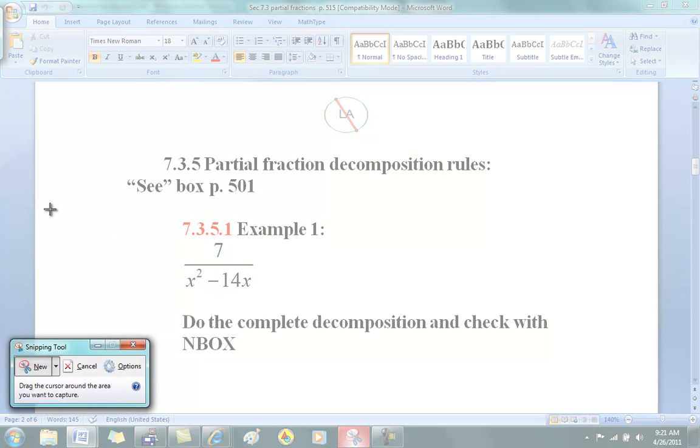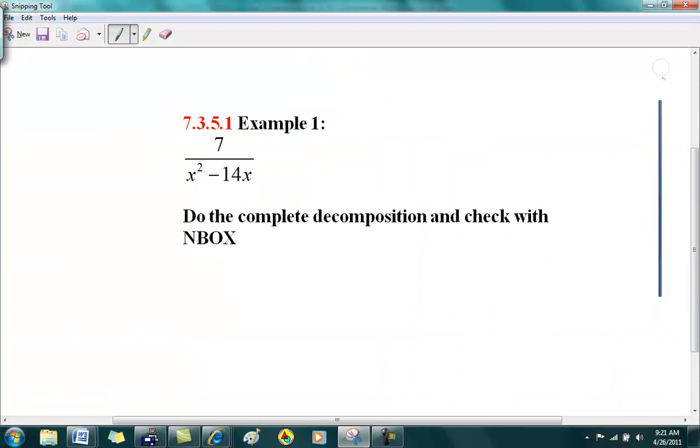Okay, let's go work on the example. Okay, so here is my fraction. I want to write it in a partial fraction. So my first step is to actually factor out the bottom. So I'm going to write this as 7 over x times x minus 14. Okay, so what you want to do is you want to make the denominator a product of linear factors. Okay, linear factors. So x is a linear factor, x minus 14 is another linear factor. Then according to the rules on page 501, this is equivalent to A over x plus B over x minus 14.